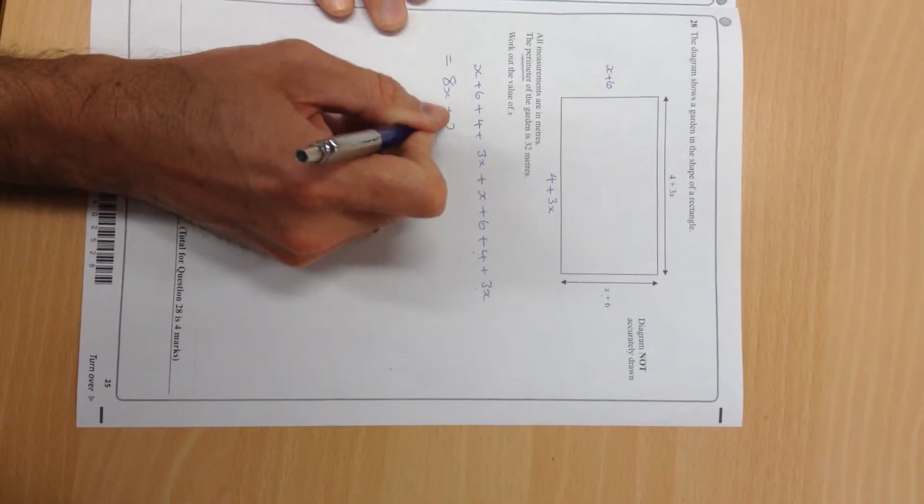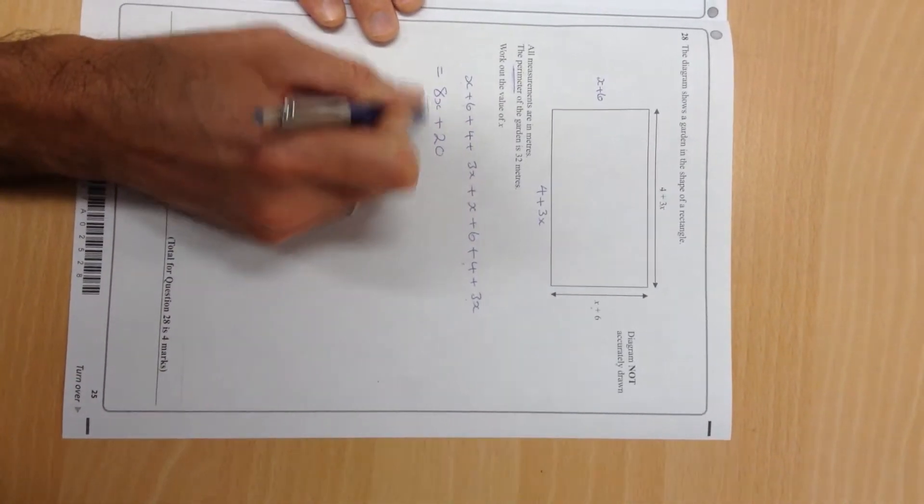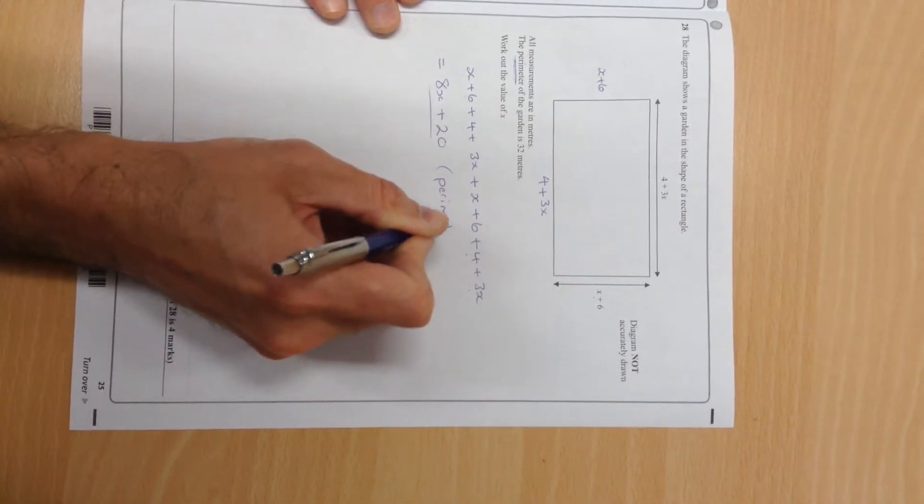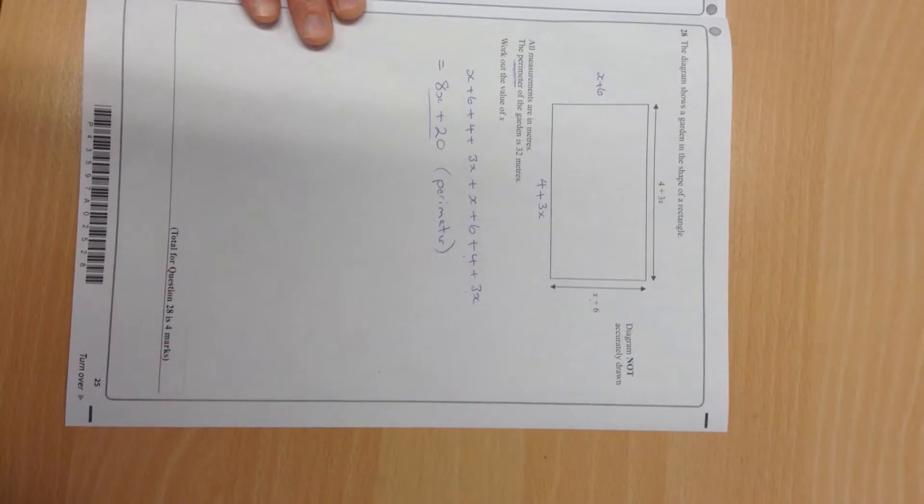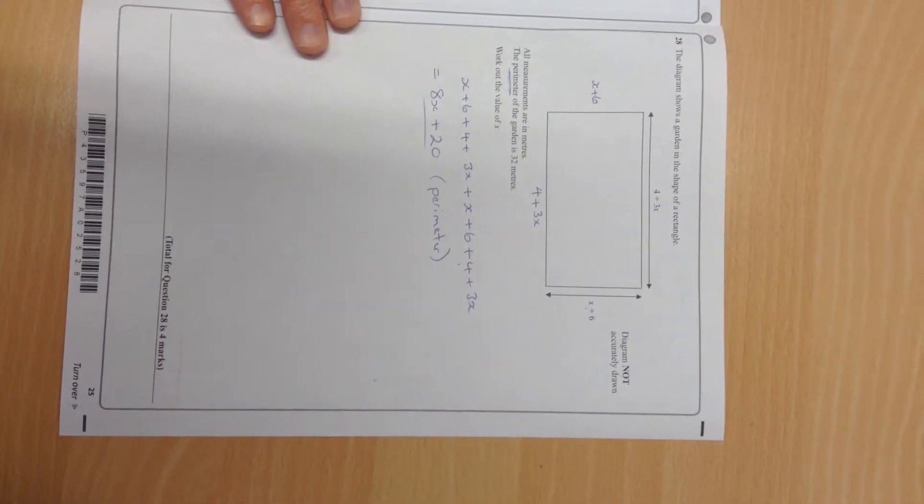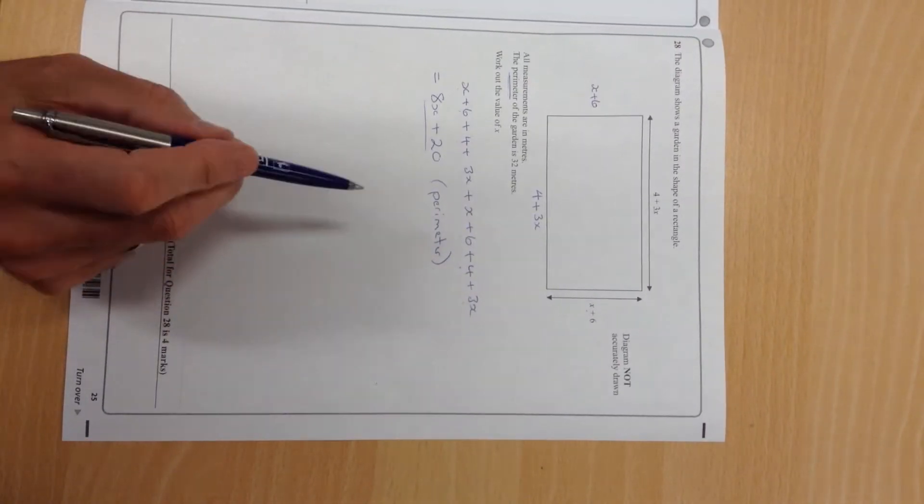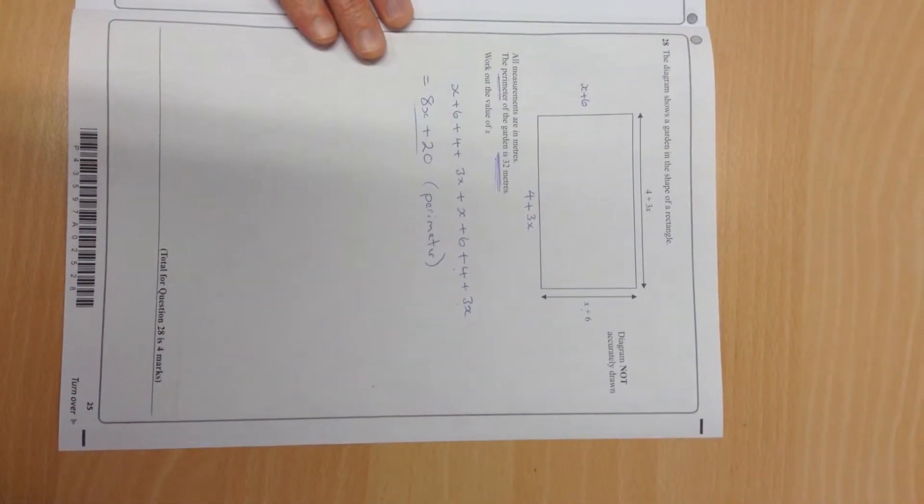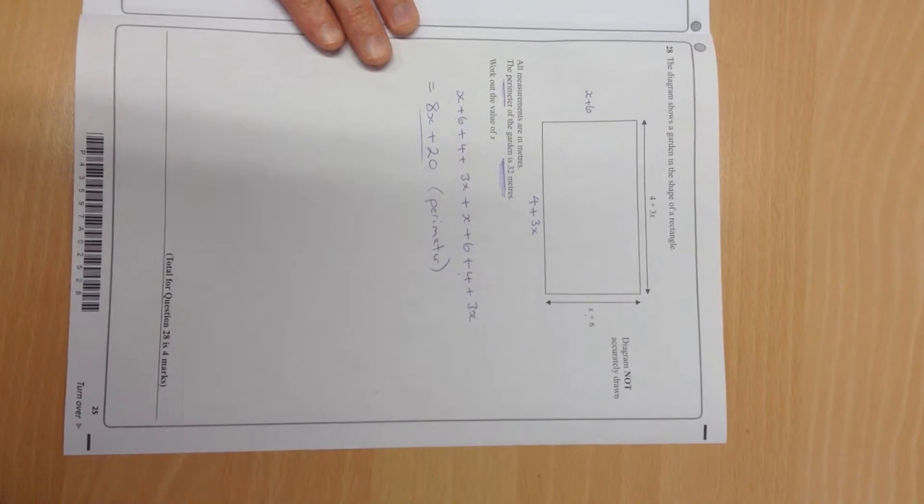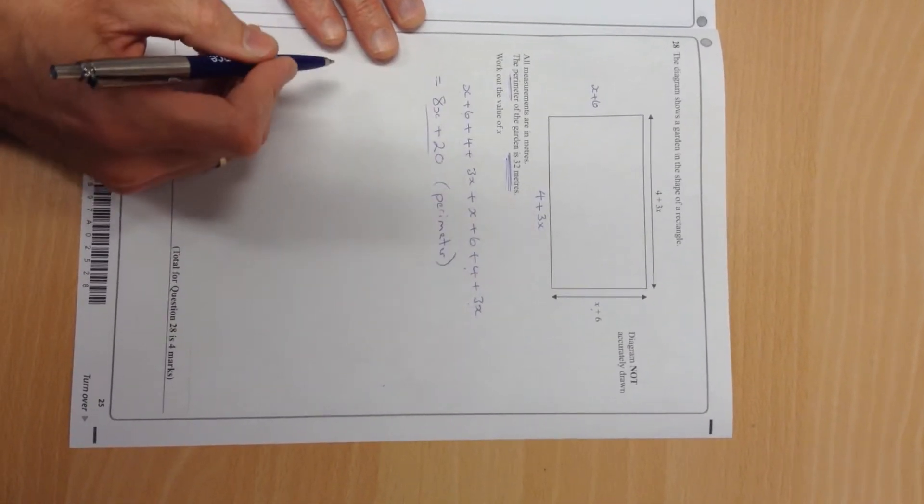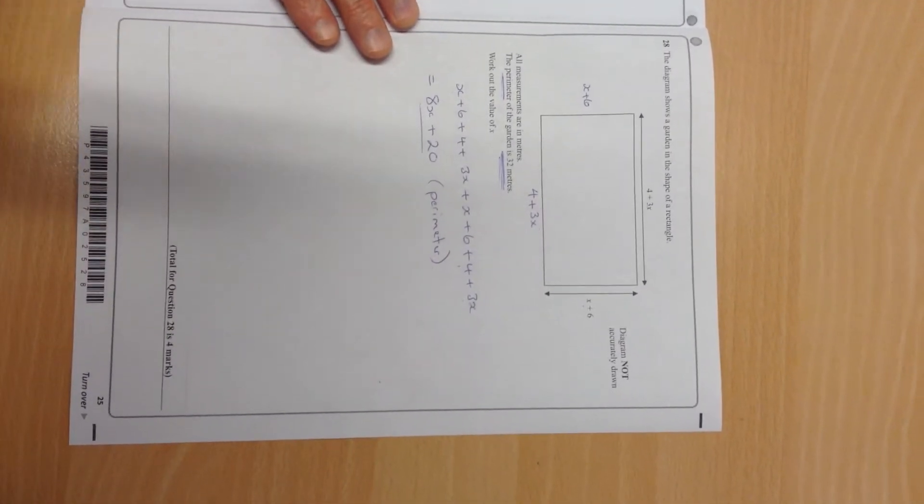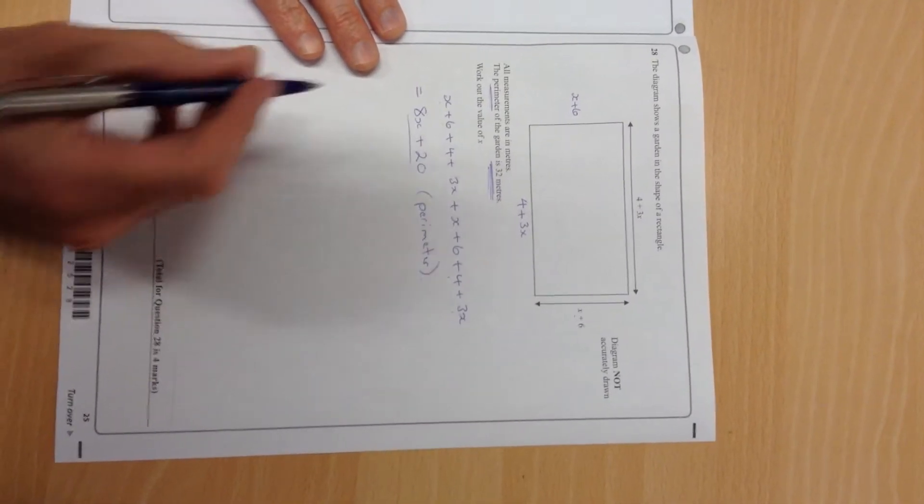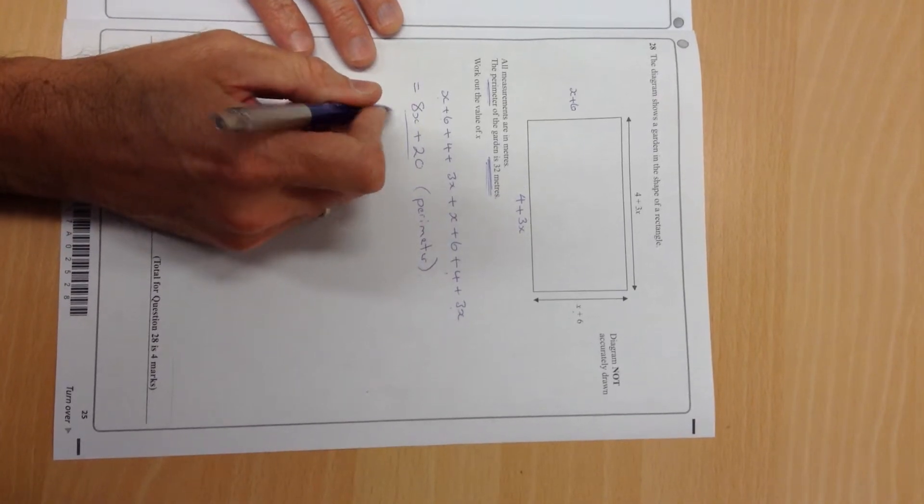Now this bit tells me that the perimeter is 32 meters. In other words, that is equal to 32. So they're trying to get me to write down an equation and solve it, so that's what I'm going to do.